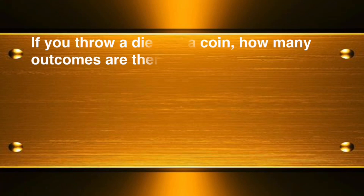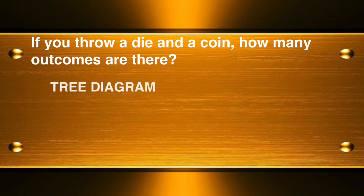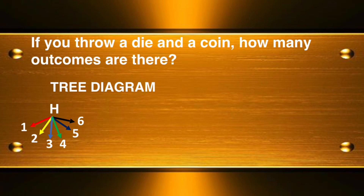Example: if you throw a die and a coin, how many outcomes are there? We can use any of the three methods. Using the tree diagram, the faces of a coin are paired to the faces of a die. You can get head paired to one, two, three, four, five, or six, and tail paired to one, two, three, four, five, or six.